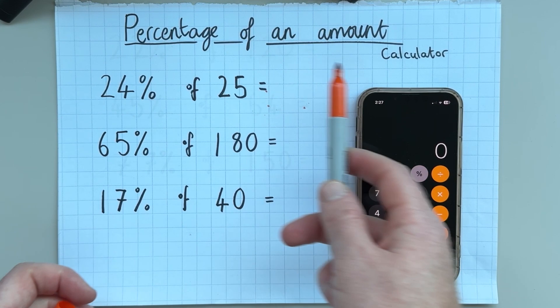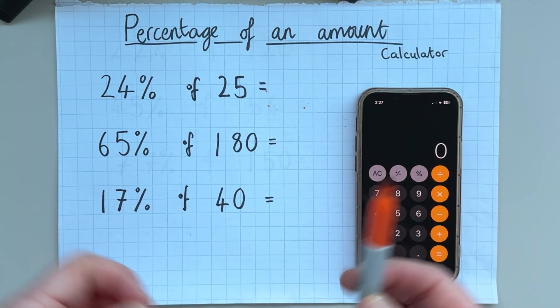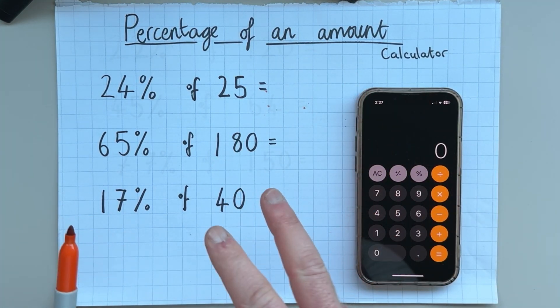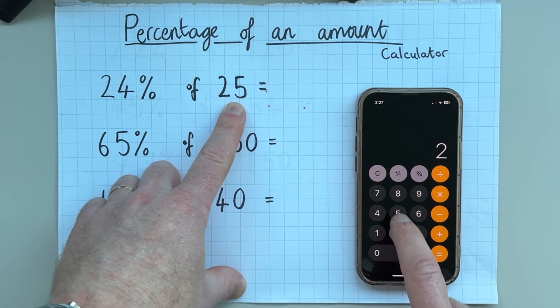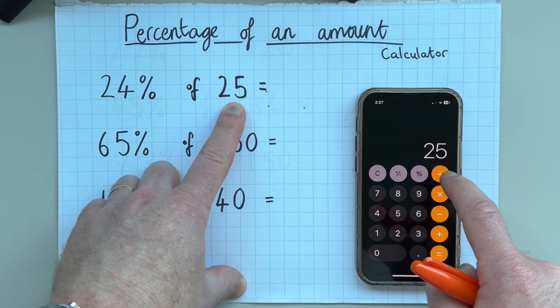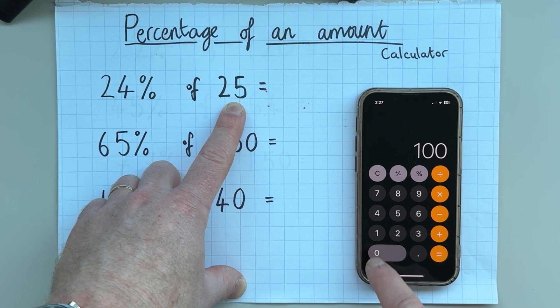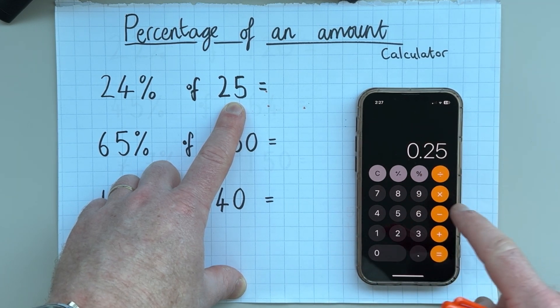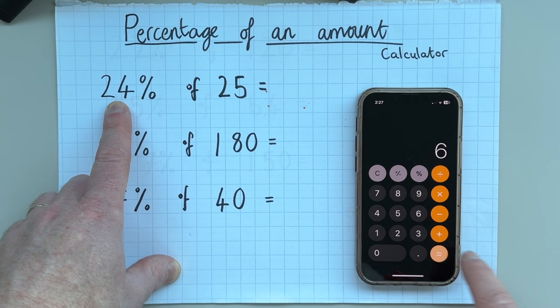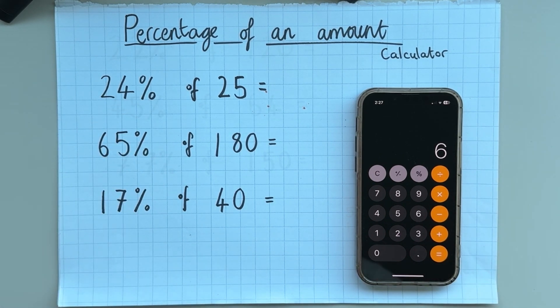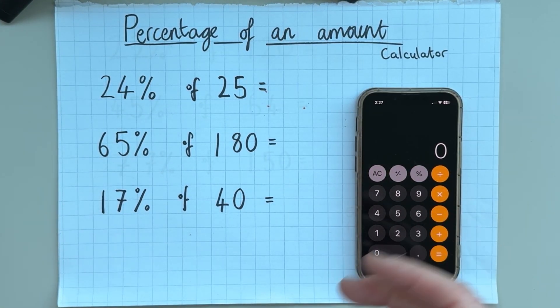So when you want to work out the percentage of an amount if you read it from a textbook they might get you to do a two-step process. So they will get you to take 25, they will get you to divide it by 100, that's one step, and then they would get you to multiply it by 24 and that would give 6. But with my step it's much easier and there's only one step to do with my trick.